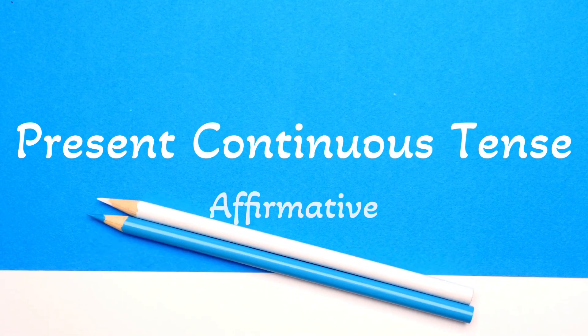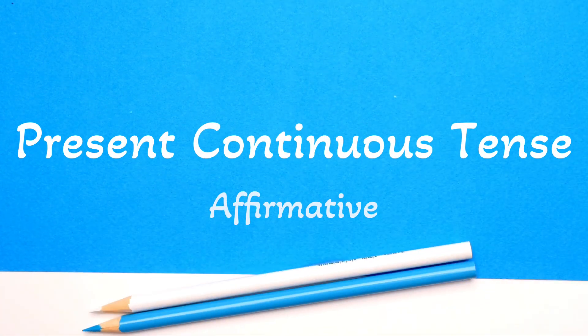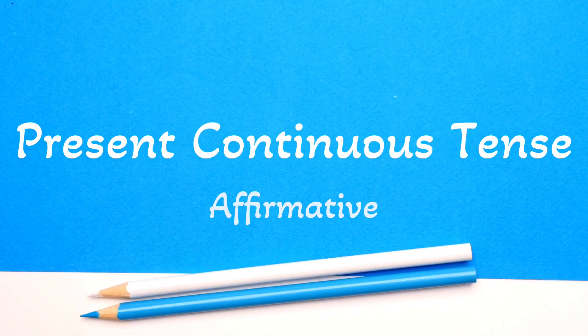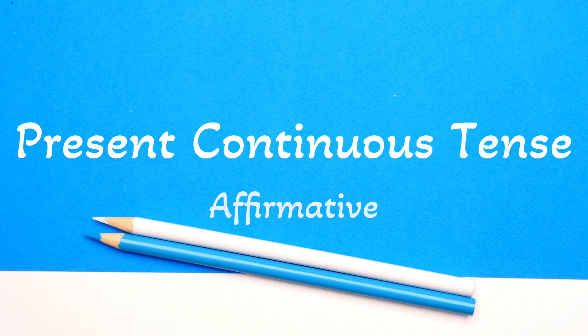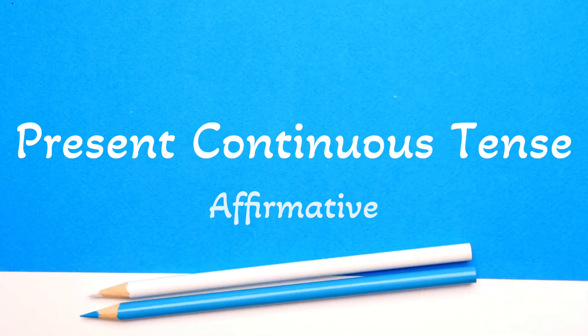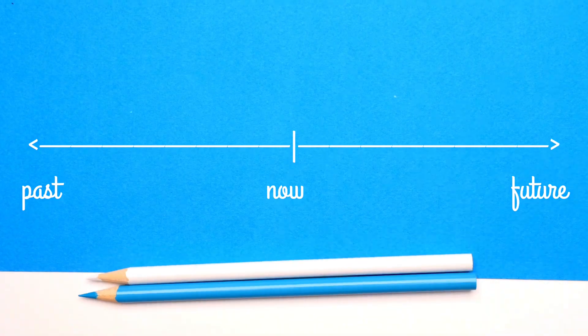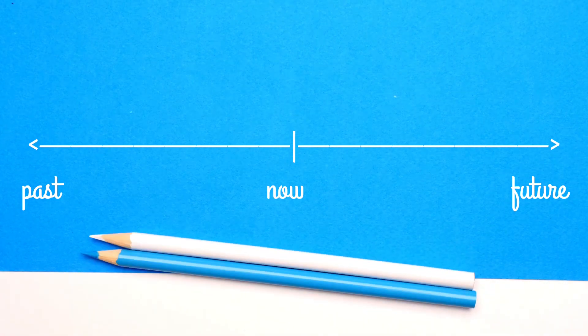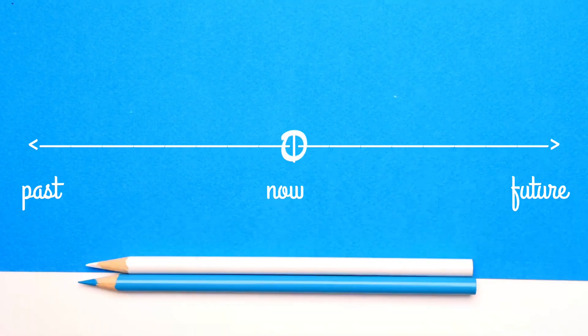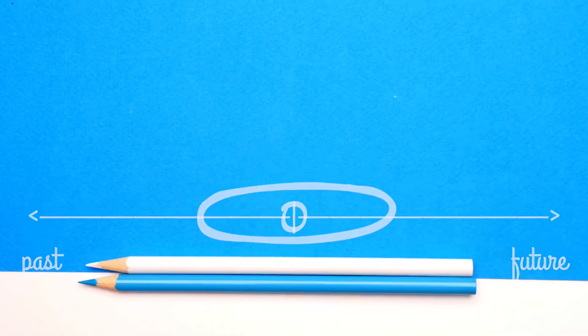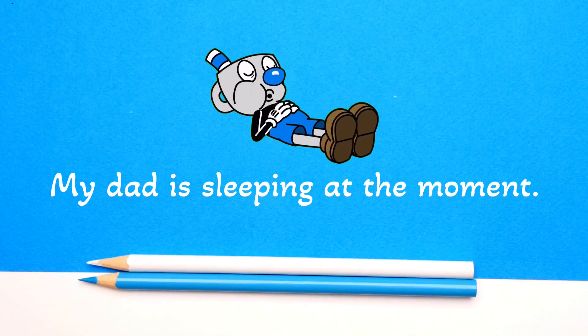Hello guys. In this video I'm going to show you the affirmative form of present continuous tense. We use the present continuous to talk about things that are happening now or around now. For example, my dad is sleeping at the moment.